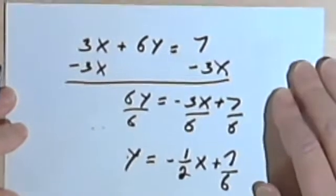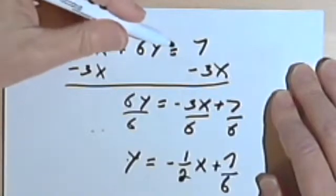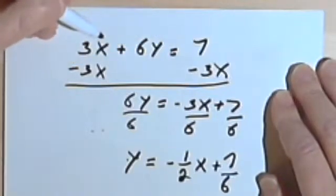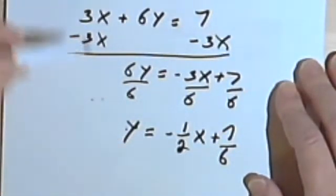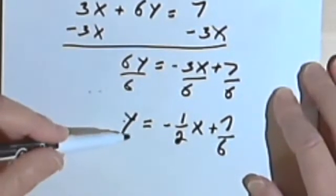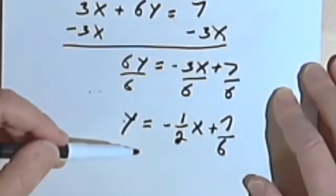So if you see something and it's in standard form, like this 3x plus 6y equals 7, that's going to be a linear function. If you see anything else, you can either turn it into that form, or you can turn it into the y equals mx plus b form, the slope-intercept form. That's going to be a linear function.